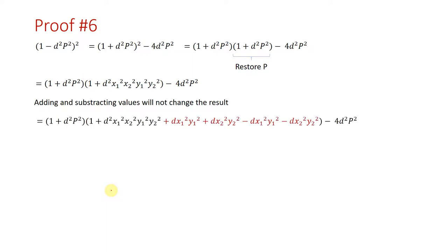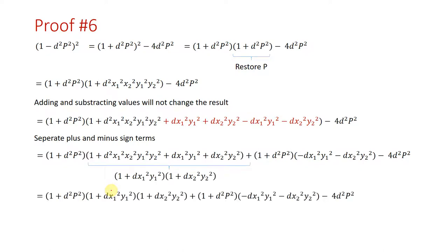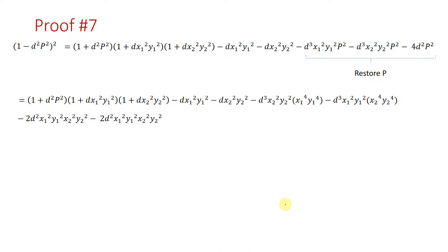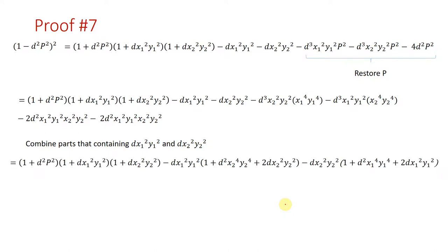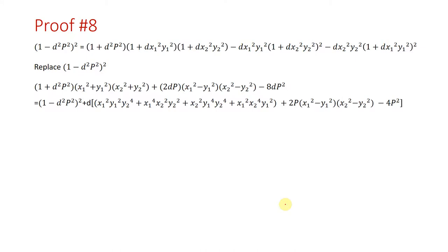Restoring the p value and adding and subtracting the same values will not change the result. Separating the plus and minus sign terms and multiplying the first and second parentheses, we then restore the p value again. Combining the parts containing d times x1 squared y1 squared and d times x2 squared y2 squared, these terms can be written in simplified form.